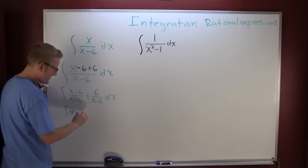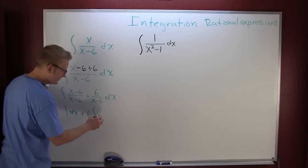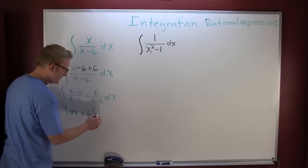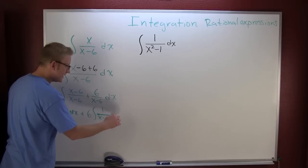dx plus 6. I pass that 6 out of my integral, and then on the inside I have 1 over x minus 6 dx.